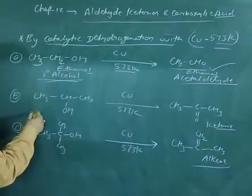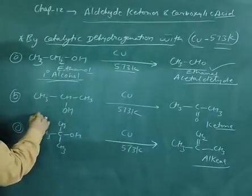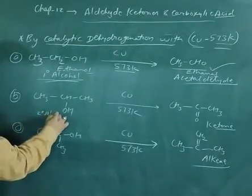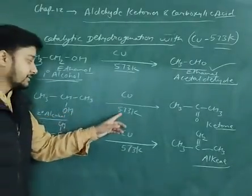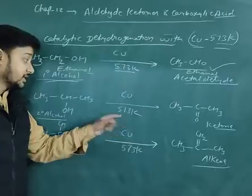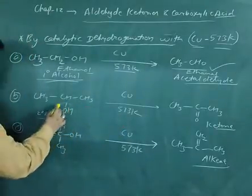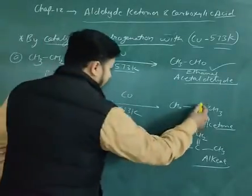Come to the next reaction of this part. This is a secondary alcohol. This secondary alcohol is going to react with copper at temperature 573 kelvin. It is a process of oxidation in which this alcohol will be converted into the ketone part.